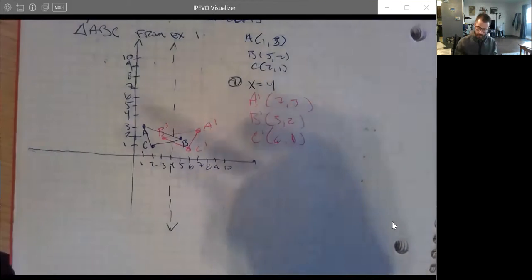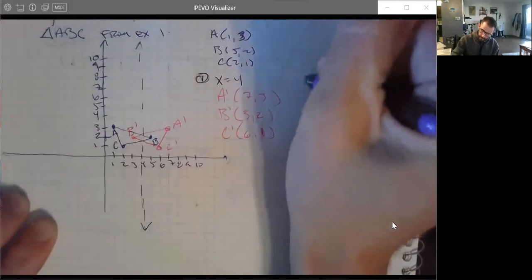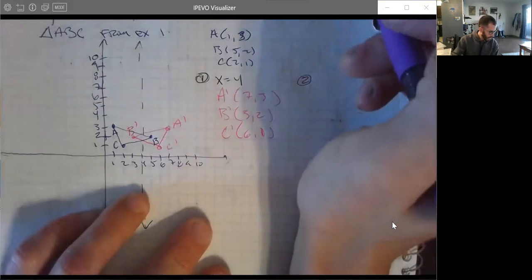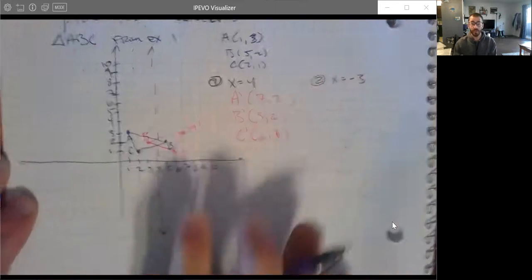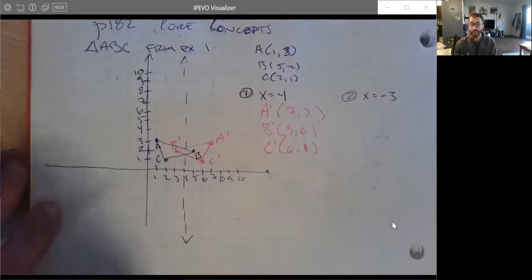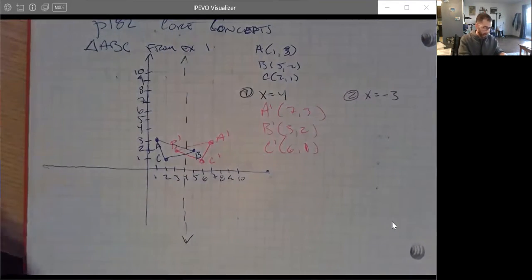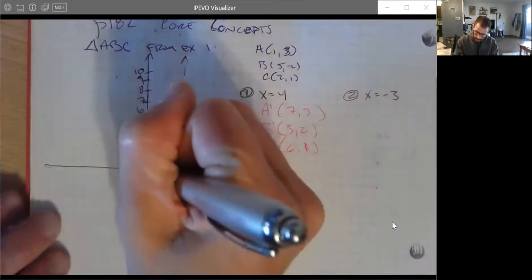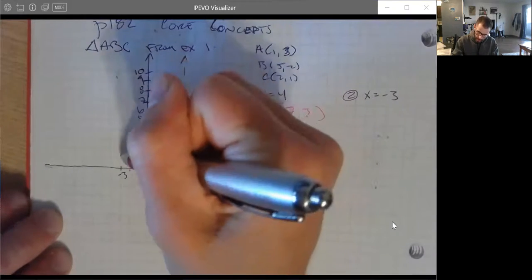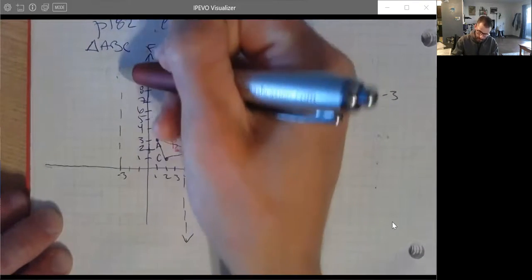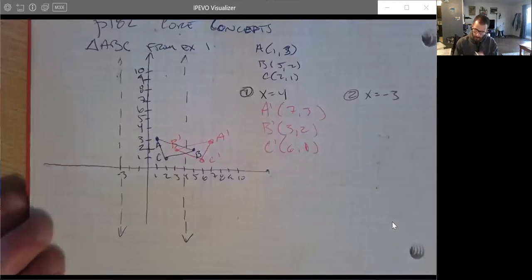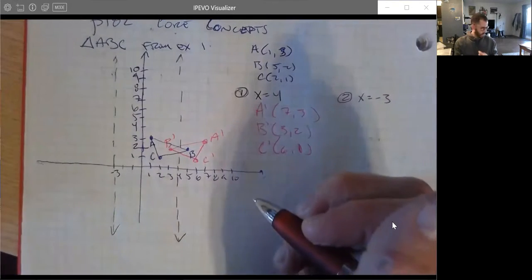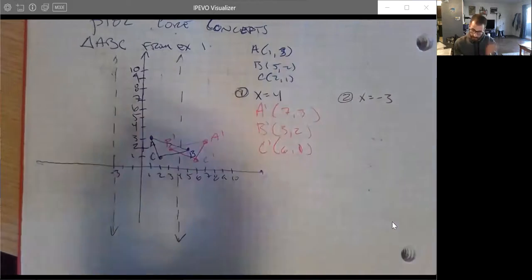Let's do number two. The line of reflection is x equals negative three, which looks like it's gonna be all the way over here. I think I'll be okay. So negative one, negative two, and negative three x equals extreme sports, extreme sports rock climbing vertical.